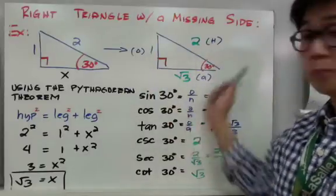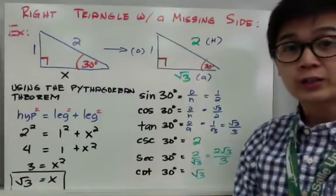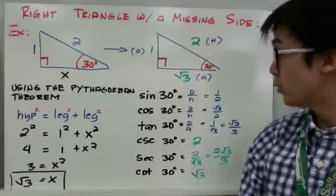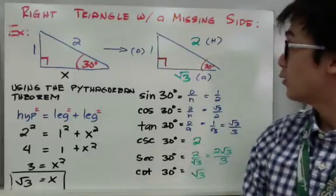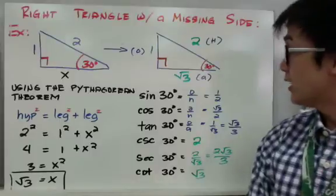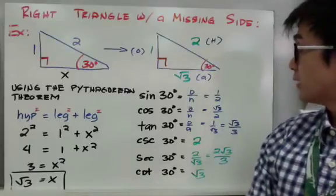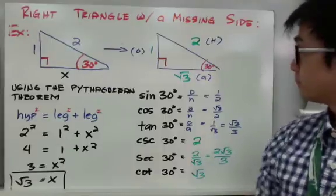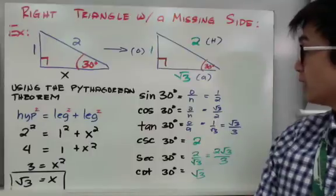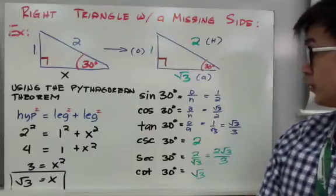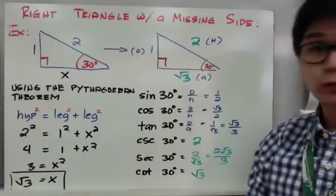Now we know that the missing side of the triangle is square root of 3, giving us a complete set of sides for the right triangle. We can now use the 6 trig ratio formulas — SOHCAHTOA and CHO-SHA-CAO — to find the 6 trig ratios. For sine 30°, it's opposite over hypotenuse, which equals 1 over 2. For cosine 30°, adjacent over hypotenuse, we have square root of 3 over 2.